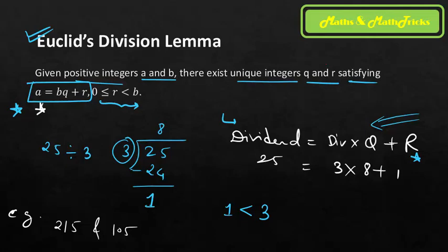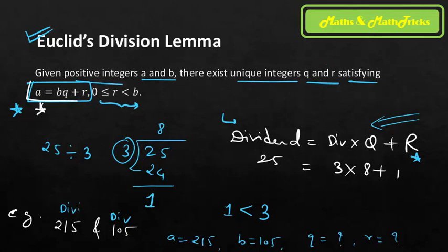Here a = 215 and b = 105. You find q and r using division. Euclid's Division Lemma states that for any two given positive integers, we can always set up the equation a = bq + r. The key condition: the remainder is minimum zero and always strictly less than the divisor.